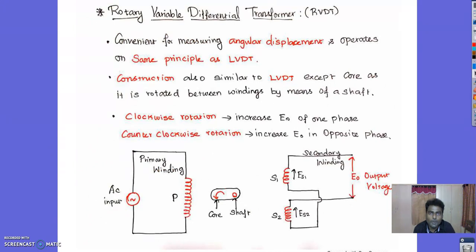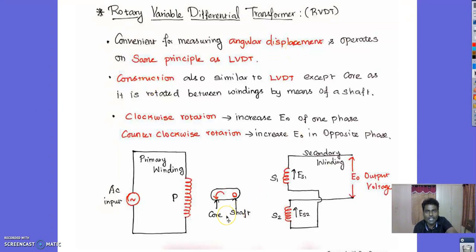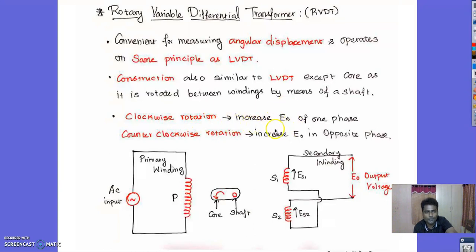Next is the Rotary Variable Differential Transformer (RVDT). The construction is different but the operating principle is the same as the LVDT. It is used for measuring angular displacement, whereas LVDT measures linear displacement. The construction is similar to LVDT except the core rotates between the windings. When the core rotates in the clockwise direction, the output EMF of one phase increases; when rotating counter-clockwise, the output voltage increases in the opposite phase.